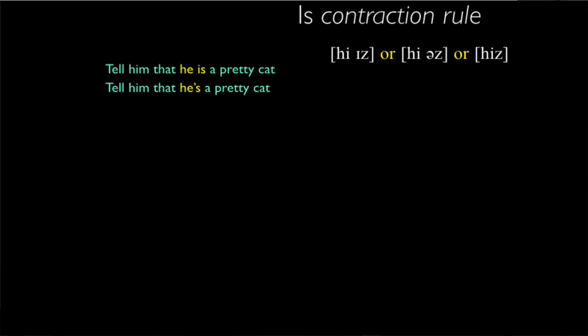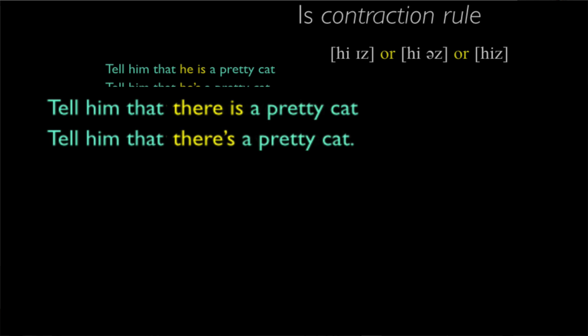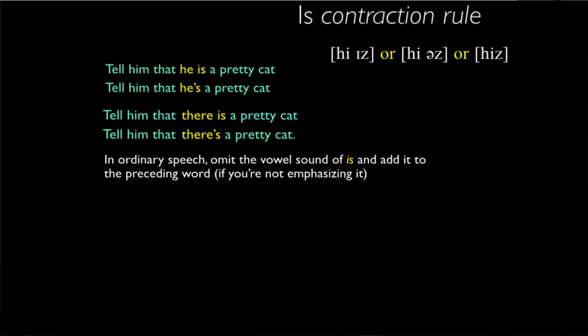The same thing happens in the case of 'tell him that there is a pretty cat.' Ordinarily, the vowel sound of the word 'is' goes unpronounced and the final sound gloms on to the preceding word. So the rule appears to be pretty simple. It can be formulated as a prose statement like this.